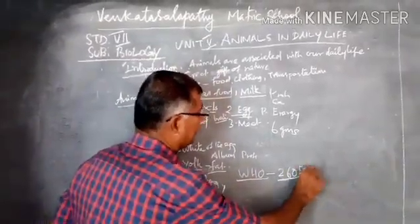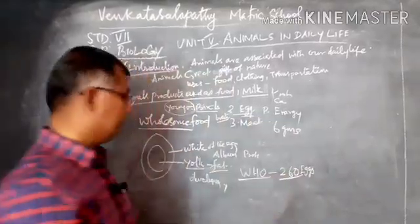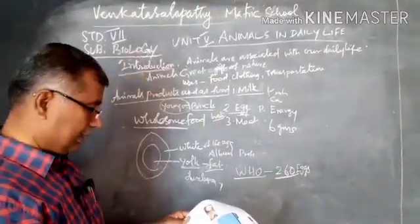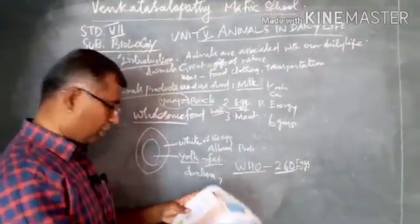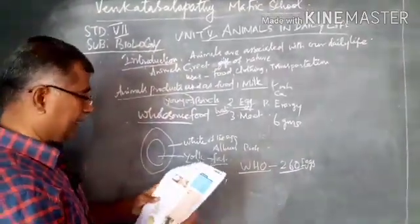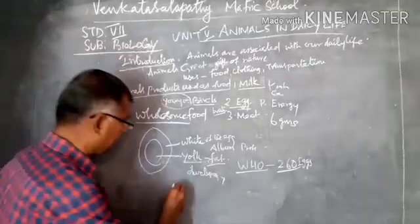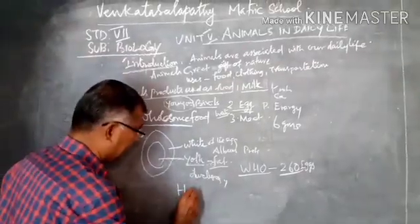According to the World Health Organization, a child should consume nearly 260 eggs per year. Another important animal product is honey.